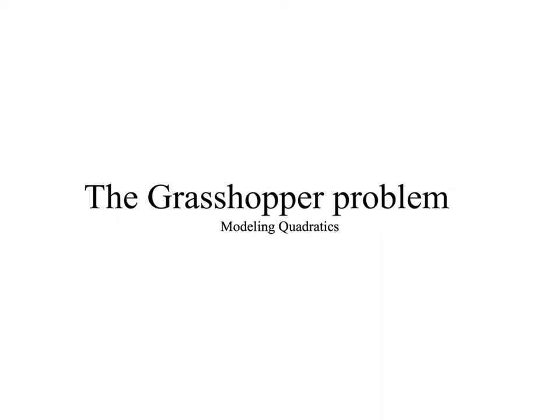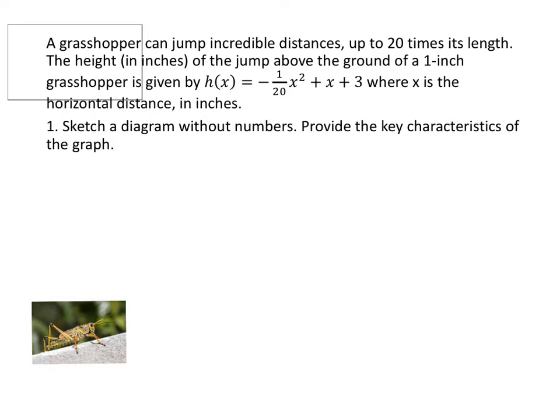We're going to discuss the grasshopper problem today. For modeling quadratics, we're talking about a grasshopper jumping. A grasshopper can jump incredible distances — up to 20 times its length. The height in inches of the jump above the ground of a 1-inch grasshopper is given by h of x equals negative one-twentieth times x squared plus x plus 3, where x is the horizontal distance in inches.